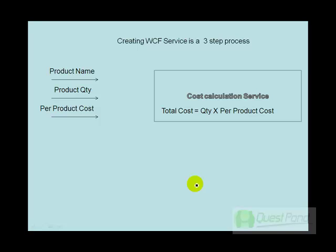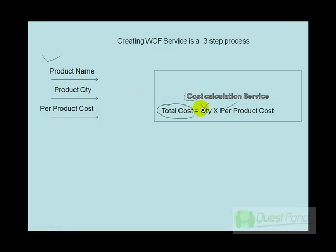Creating a WCF service is a three-step process. As previously discussed, we are going to make a service that takes quantity, per-product cost, and product name, and gives us the total cost, which is nothing but the multiplication of quantity into the per-product cost.